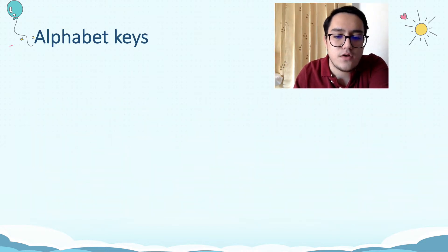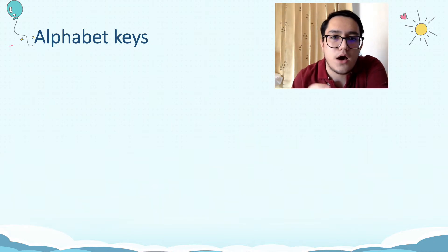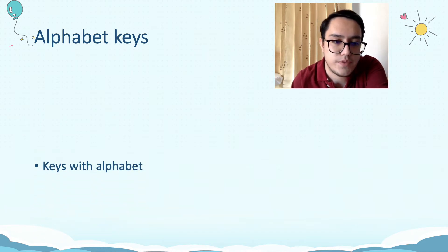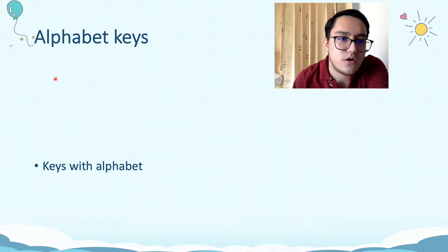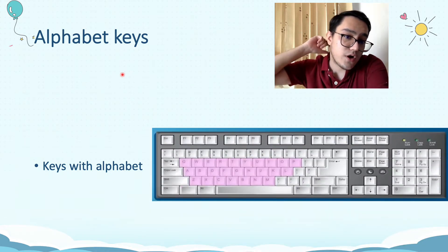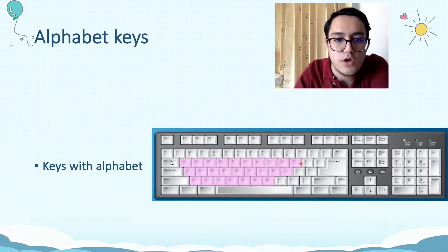Alphabet keys. Now let's talk more about the alphabet on your keyboard — the keys on your keyboard. Keys with alphabet are called alphabet keys. This is your alphabet keys. The pink one is all your alphabet keys. You can see right here — you've got everything you need.